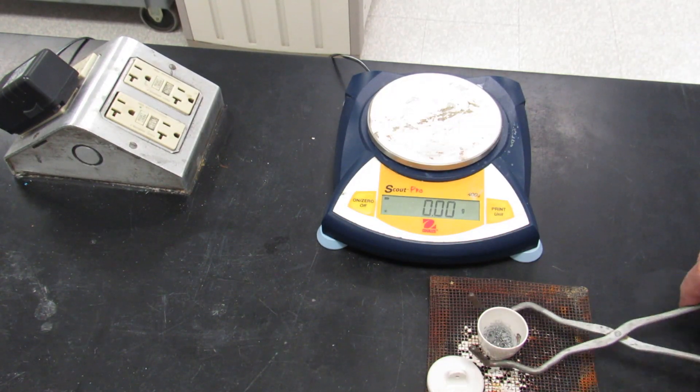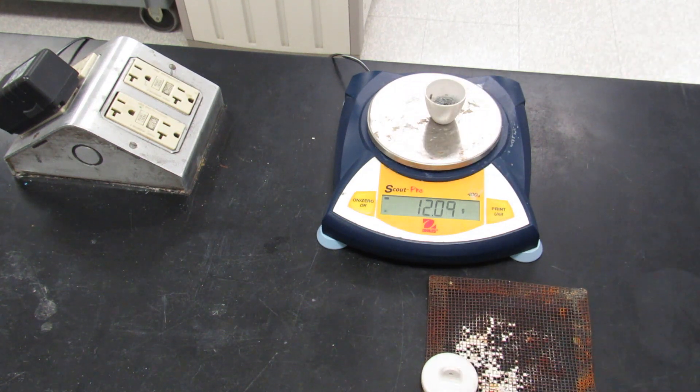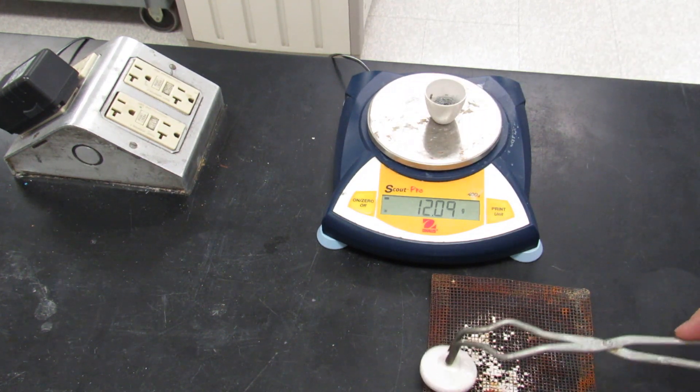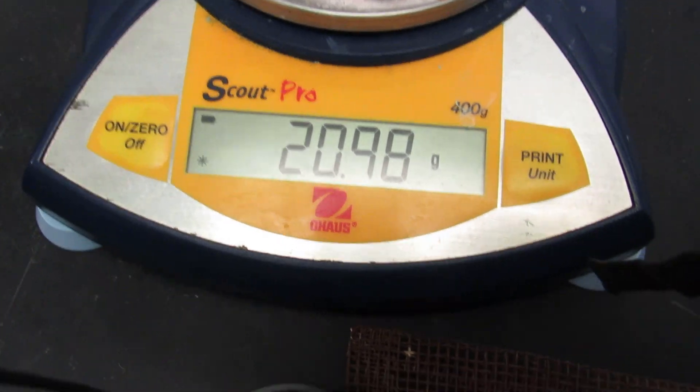Then when you're done, go ahead and mass the crucible and cover. Let's see if it changed that much. Crucible cover and now the cleaner oxide. The mass this time is 20.98. It really didn't change much at all.